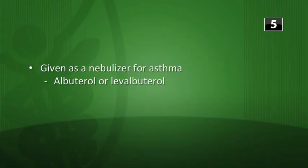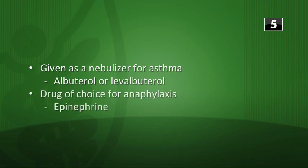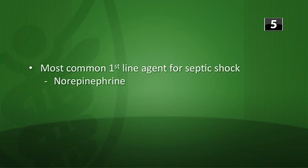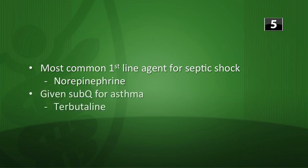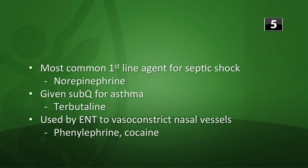Which sympathomimetic matches each statement? Given as a nebulizer for asthma → albuterol or levalbuterol (first-line for acute asthma). Drug of choice for anaphylaxis → epinephrine (EpiPen). Most common first-line agent for septic shock → norepinephrine. Given sub-Q for asthma or to stop labor → terbutaline. Used by ENTs to vasoconstrict nasal vessels → phenylephrine or cocaine. That brings us to the end of PharmaBasics 3 — I hope you learned something, see you next time.